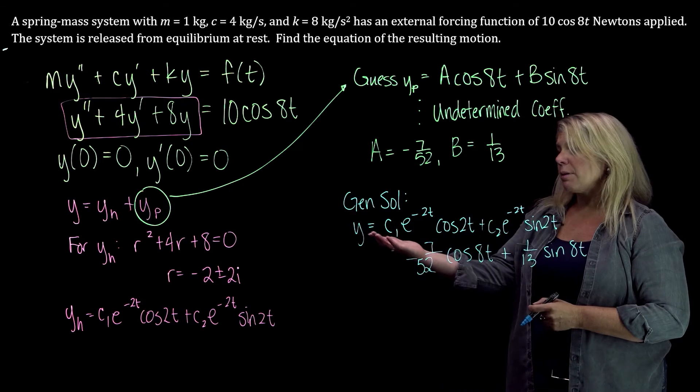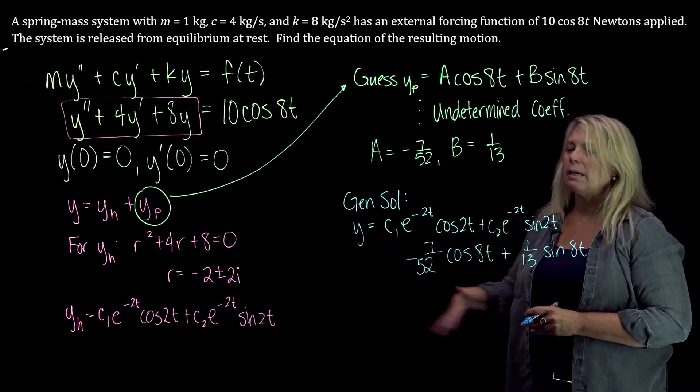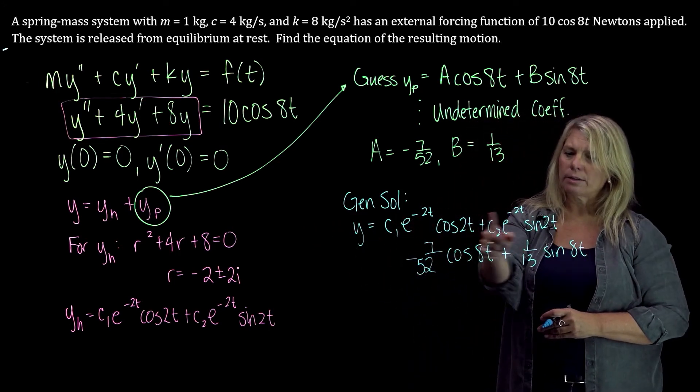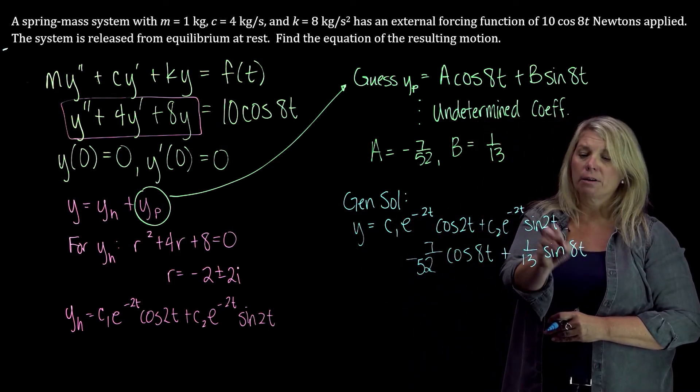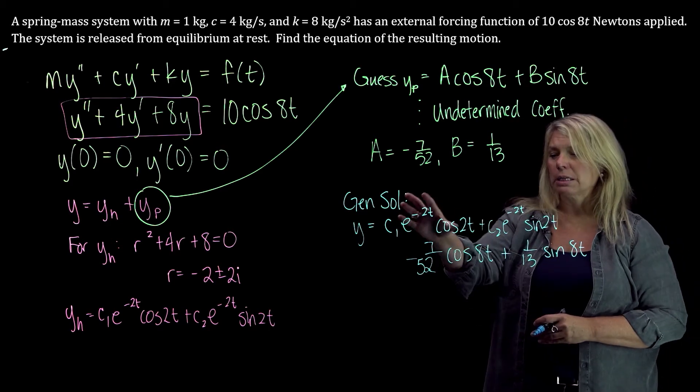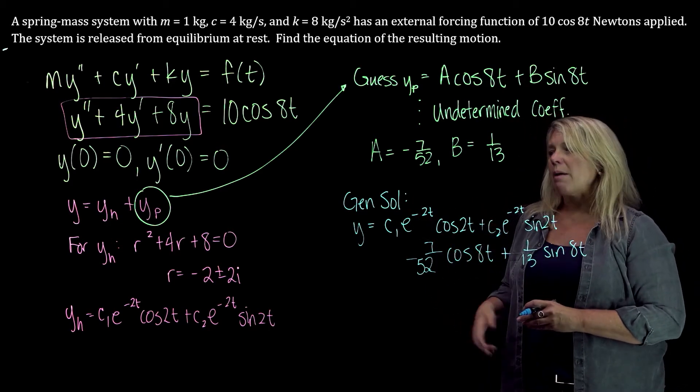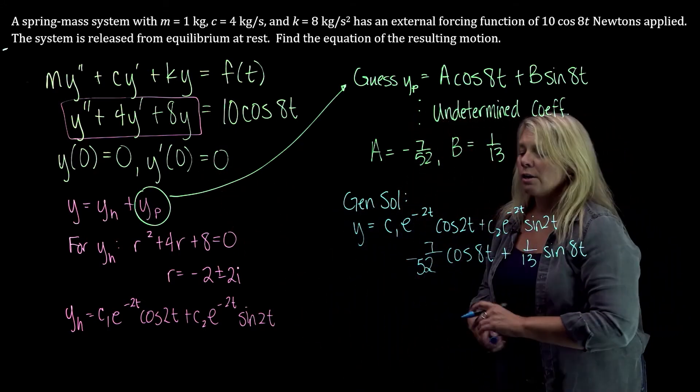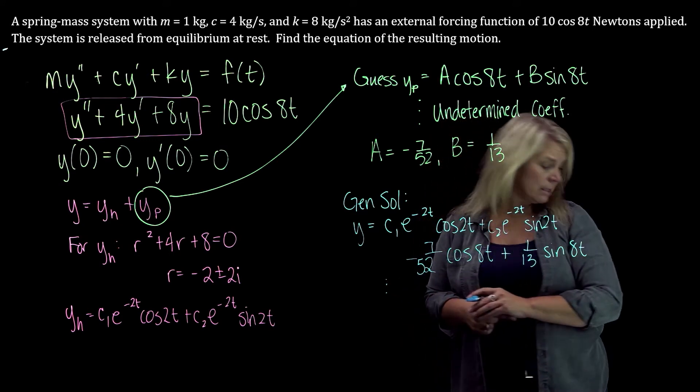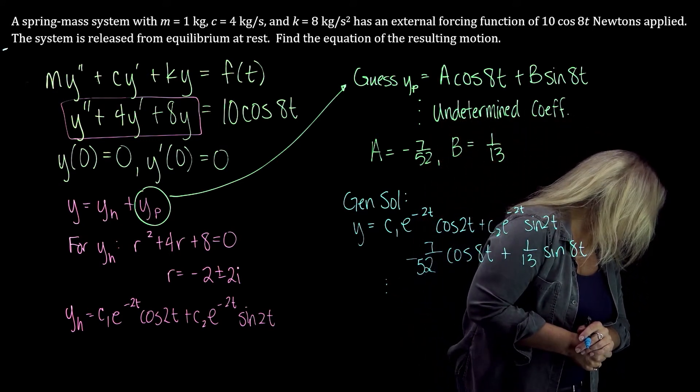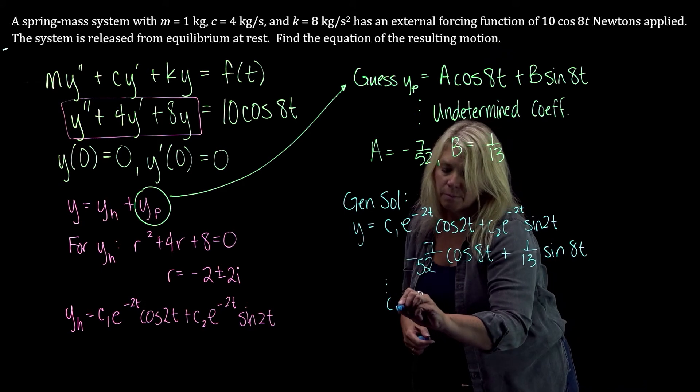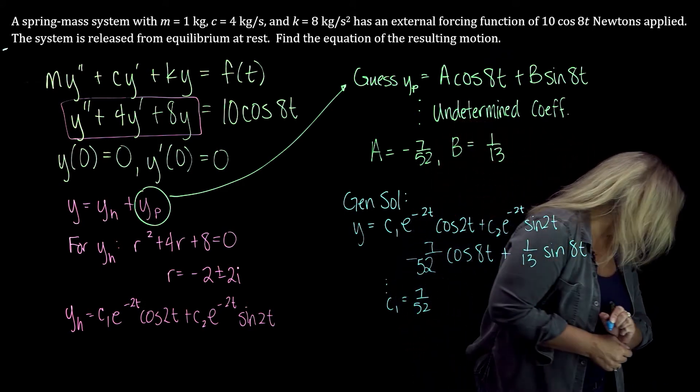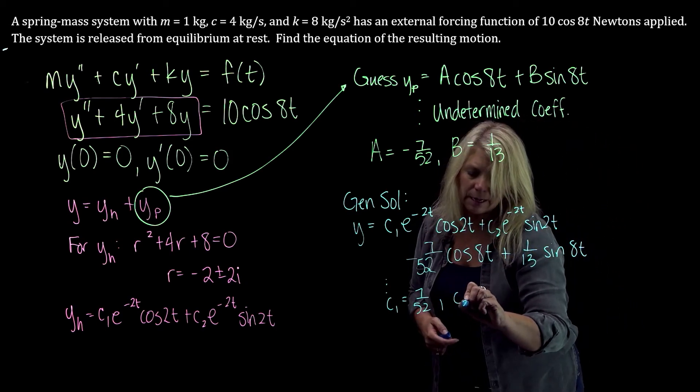Alright, so I do have some initial values here. So we can plug in t equals 0 and set this equation equal to 0. The sine of 0 is 0. So these sine terms will drop out. We'll just be left with the cosine terms. And then find my y prime and also plug in the initial value there. So I can solve for my c1 and c2. We will get that c1 is 7 over 52 and c2 is negative 9 over 52.